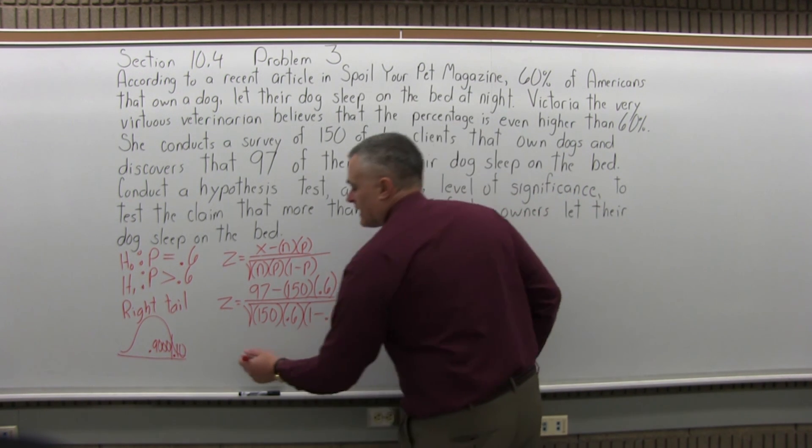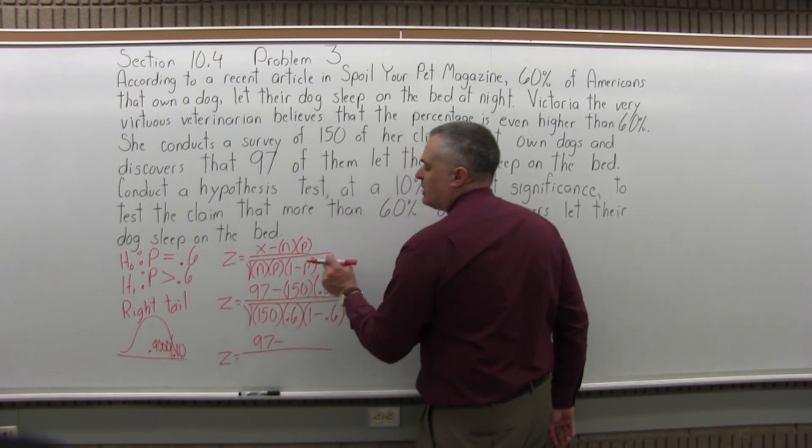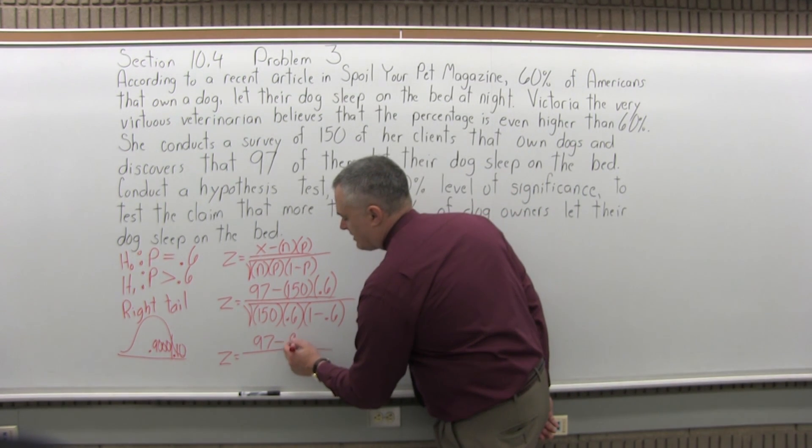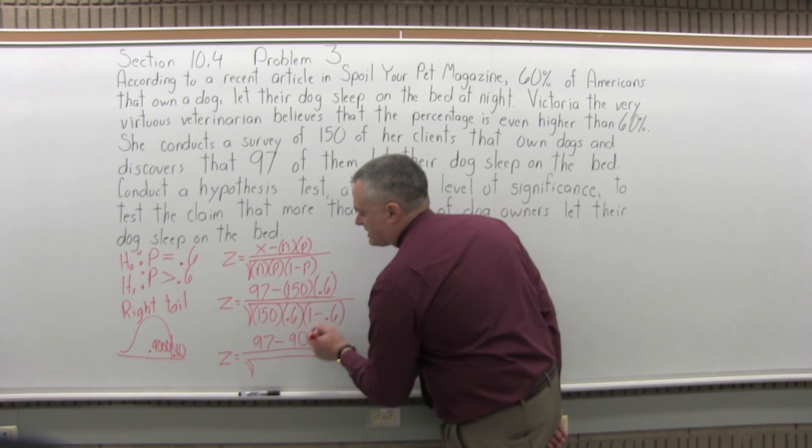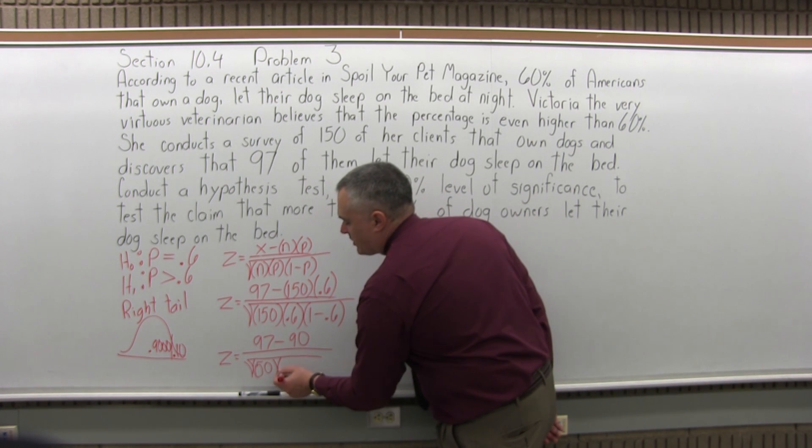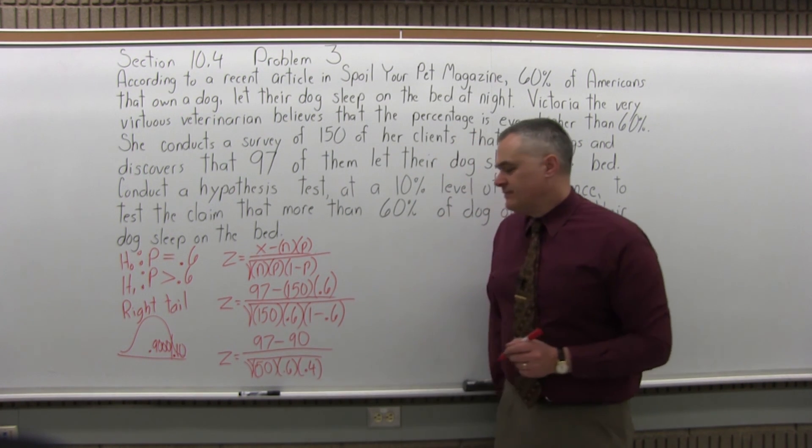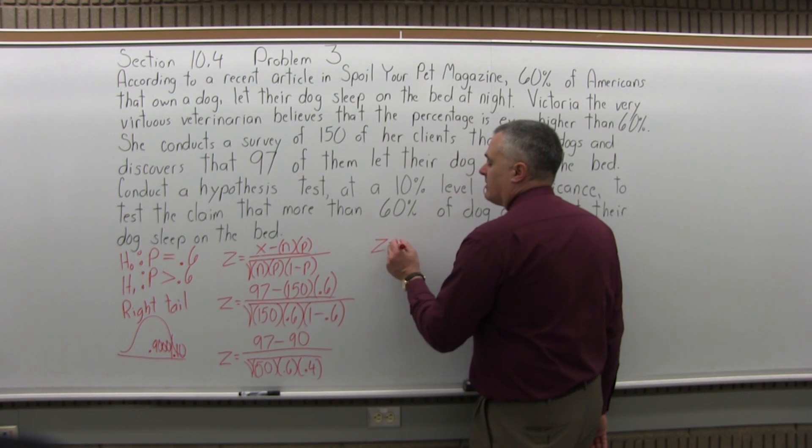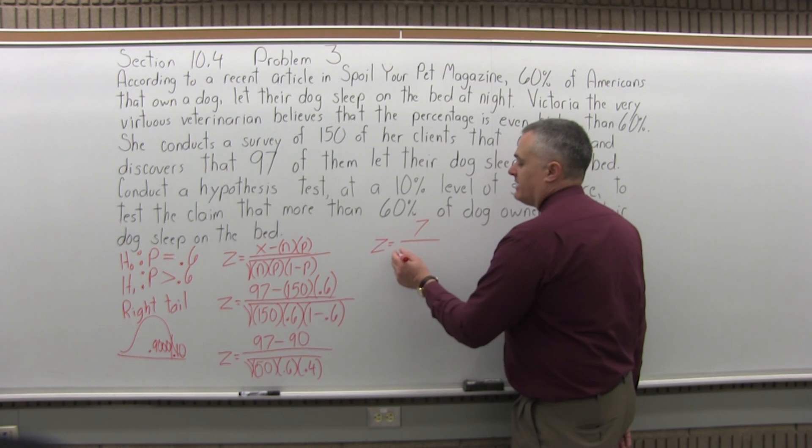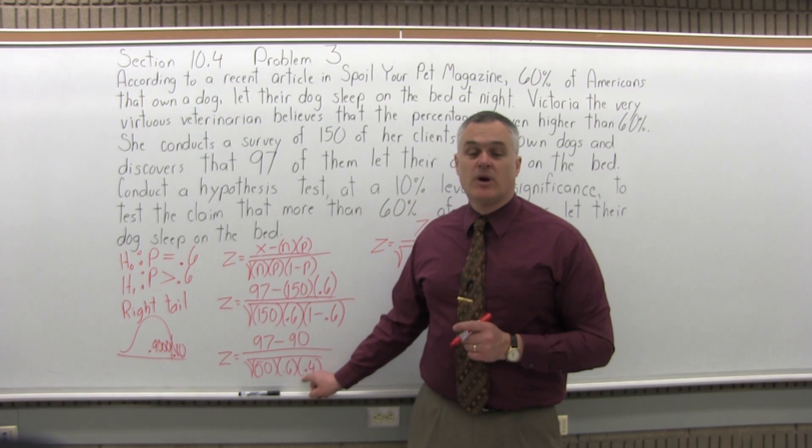I'll do some of that computation. We will have z equals 97 minus, in the numerator, 150 times 0.6 comes out to 90. Under the square root, let me simplify the last parenthesis. I would have 150 for n times 0.6, times 1 minus 0.6 is 0.4. I'll multiply that out. In the numerator, 97 minus 90 is positive 7. Pay attention to the sign. Under the square root, 150 times 0.6 times 0.4 comes out to 36.